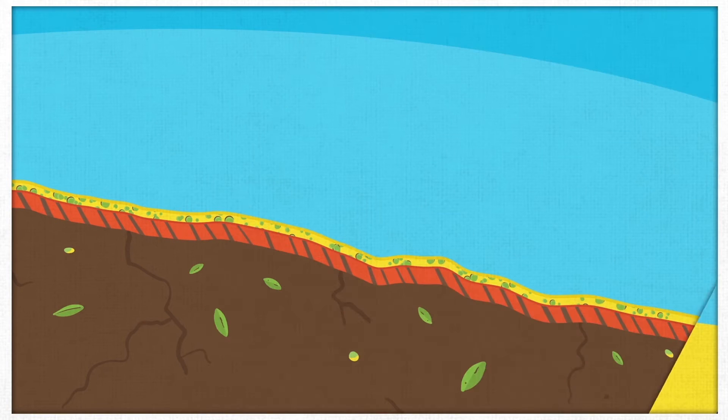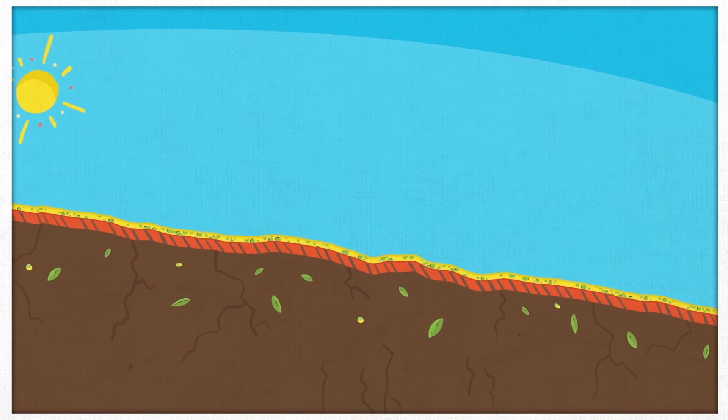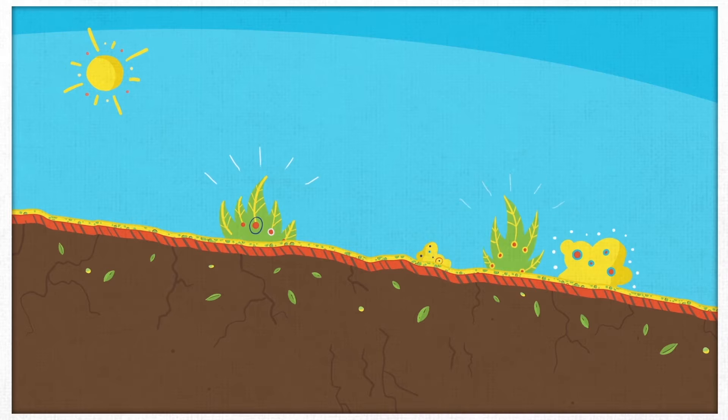In many semi-arid areas, the root cause of land degradation is the loss of vegetation. This leaves the land bare and vulnerable.